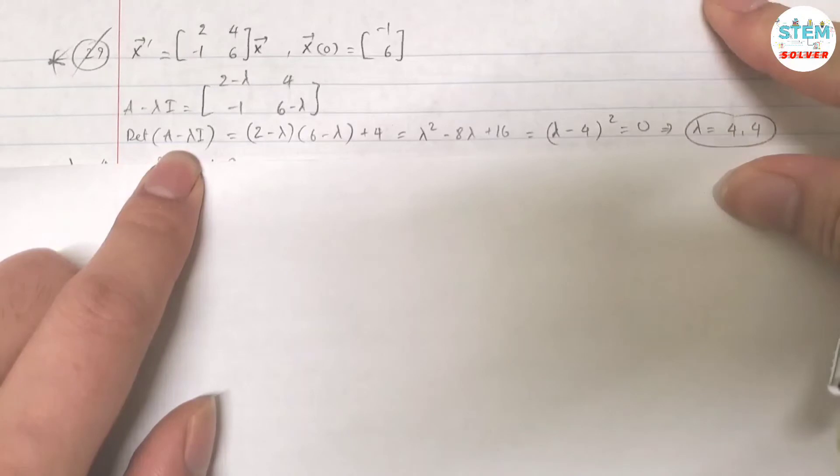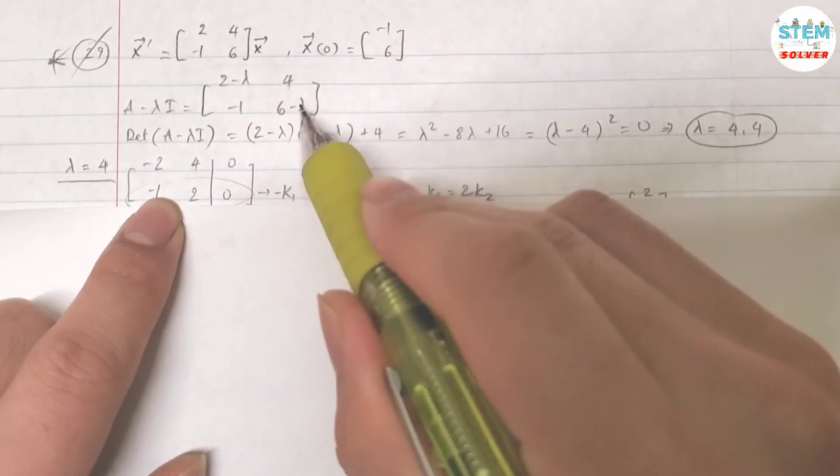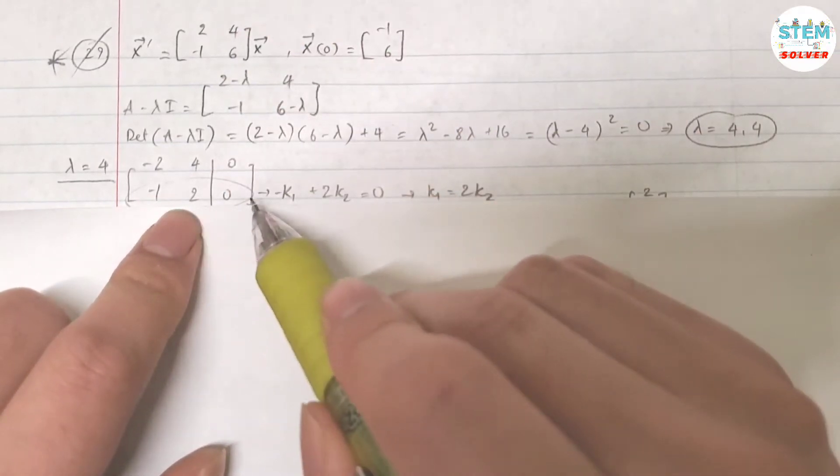So with that being said, you should know what you are going to do next, right? For lambda equals 4, plug it into this one, this matrix. That gives you this matrix, augmented with 0.